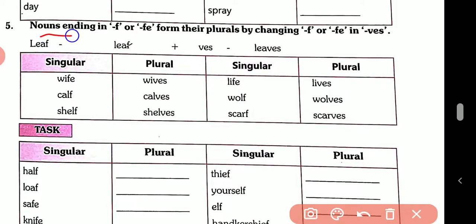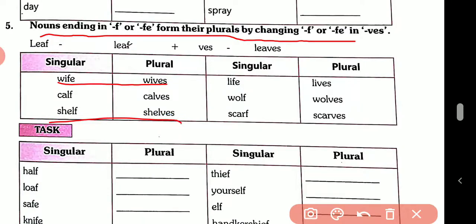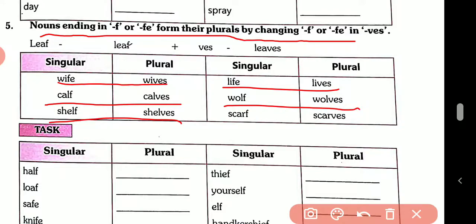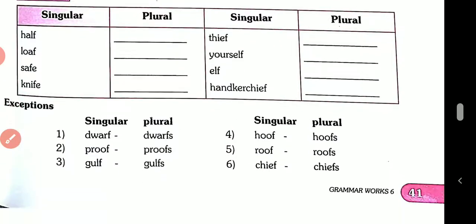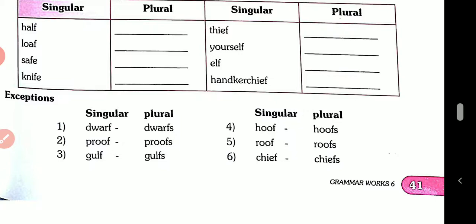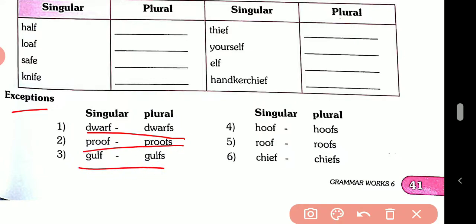Rule number five: nouns ending in -f or -fe form their plural by changing f or fe to -ves. Like: wife → wives, self → selves, calf → calves. Exceptions that just add -s: draft → drafts, proof → proofs, gulf → gulfs, hoof → hoofs, roof → roofs, chief → chiefs.